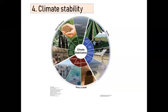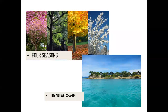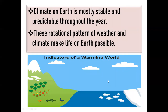Next is climate stability. The Earth can sustain life because of its climate stability. Earth's climate is mostly stable and predictable throughout the year. Other countries of the world enjoy four seasons: spring, summer, autumn, and winter, while tropical countries like ours have wet and dry seasons. This rotational pattern of weather and climate makes life on Earth possible.